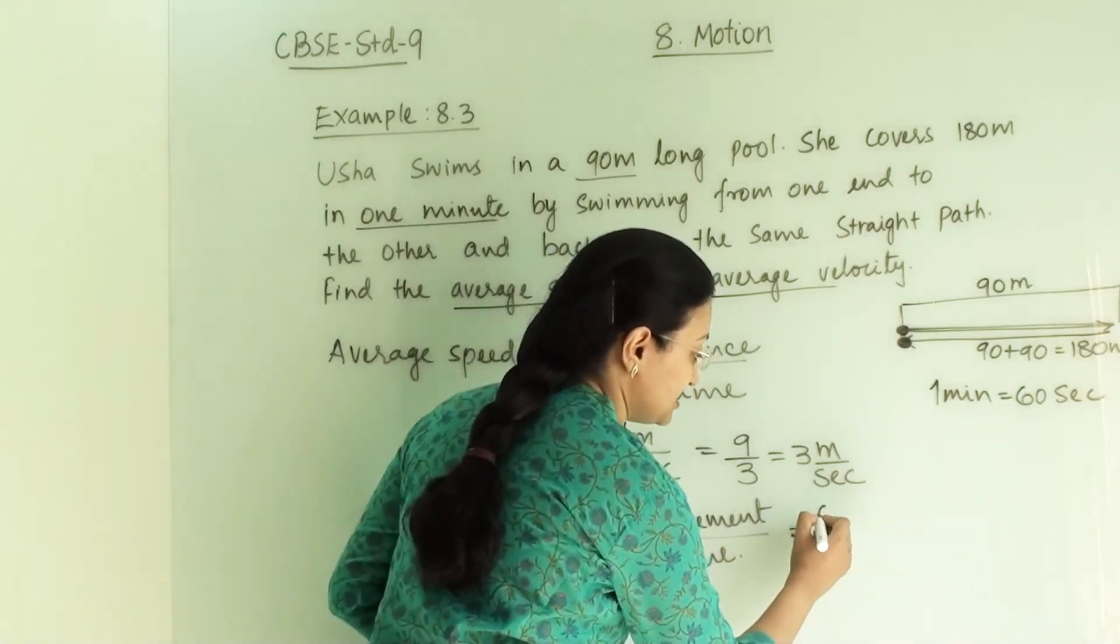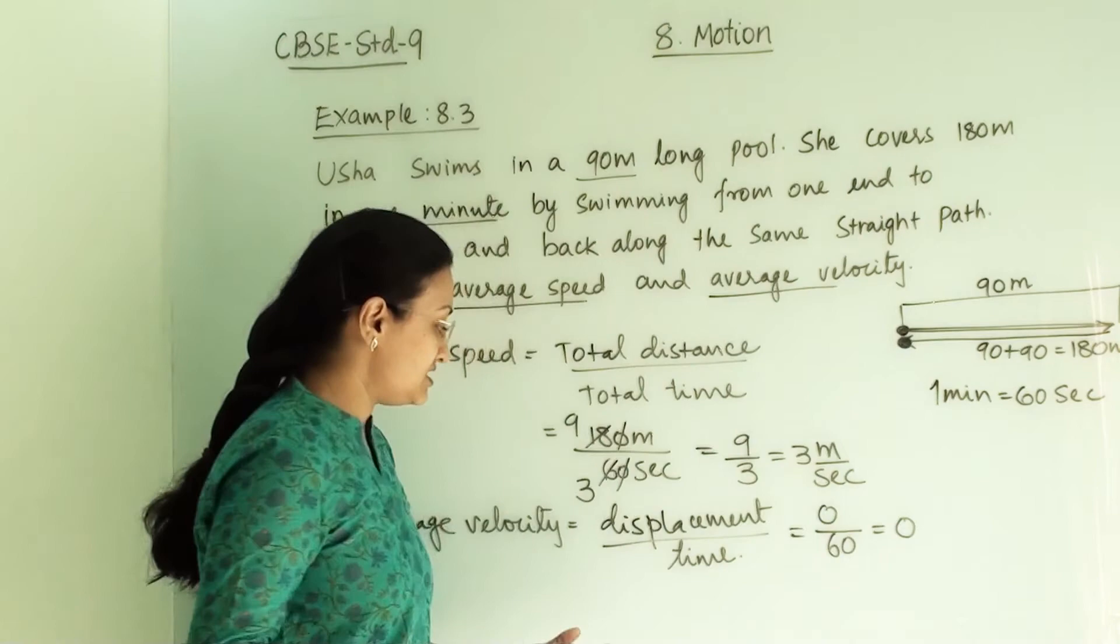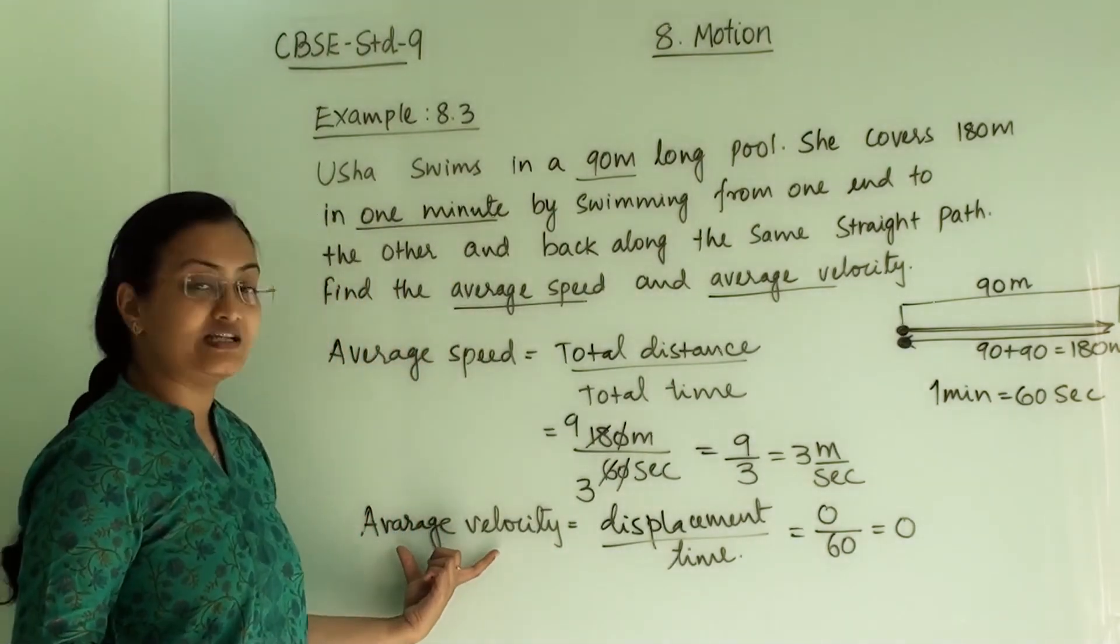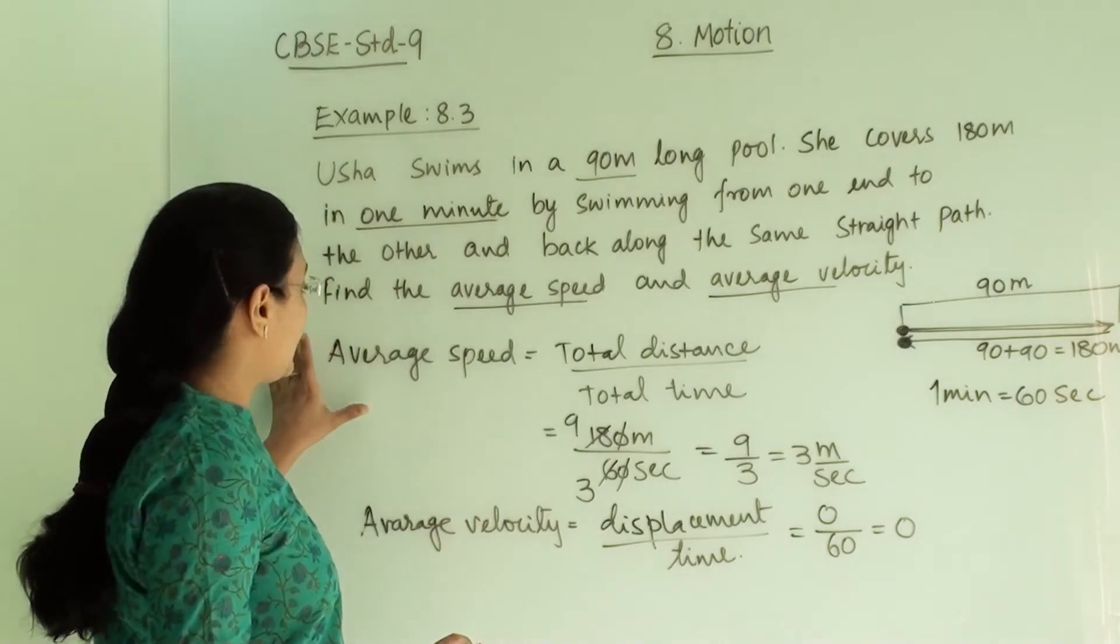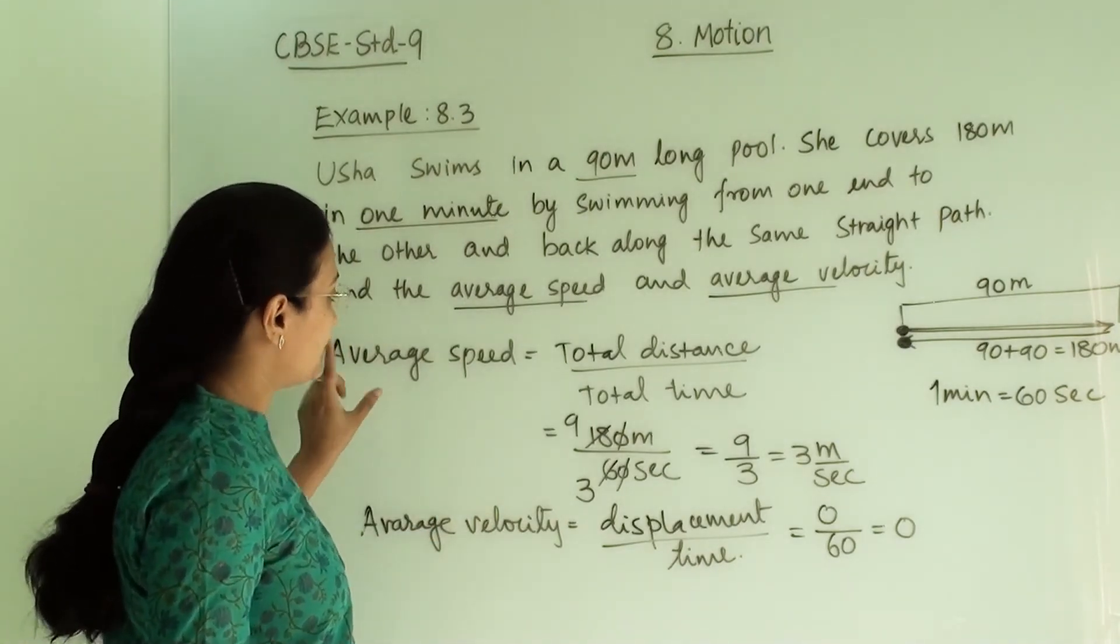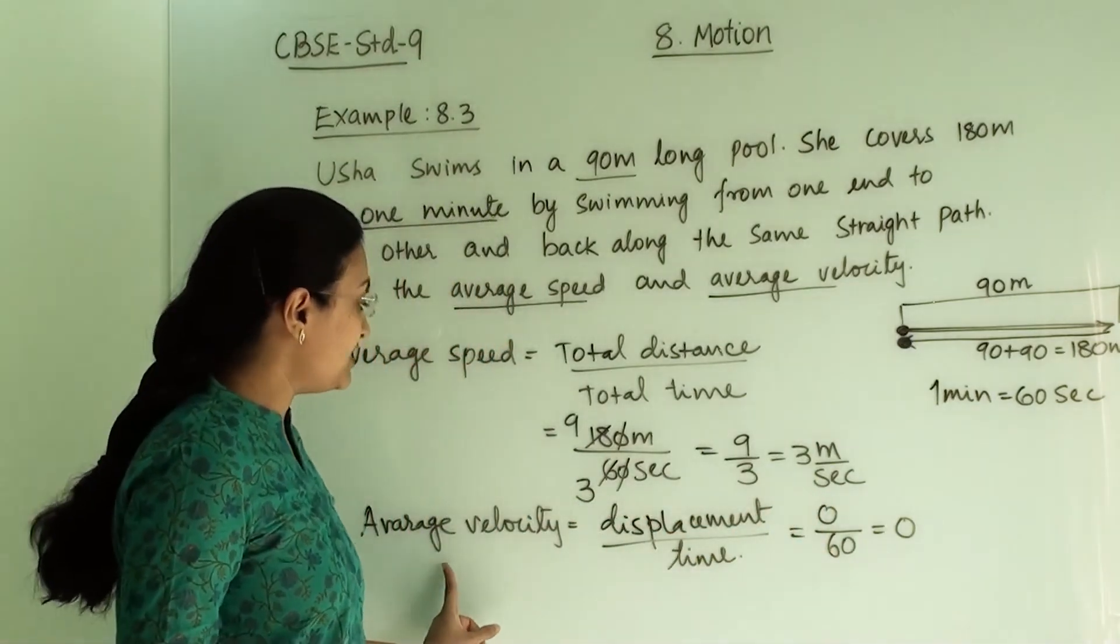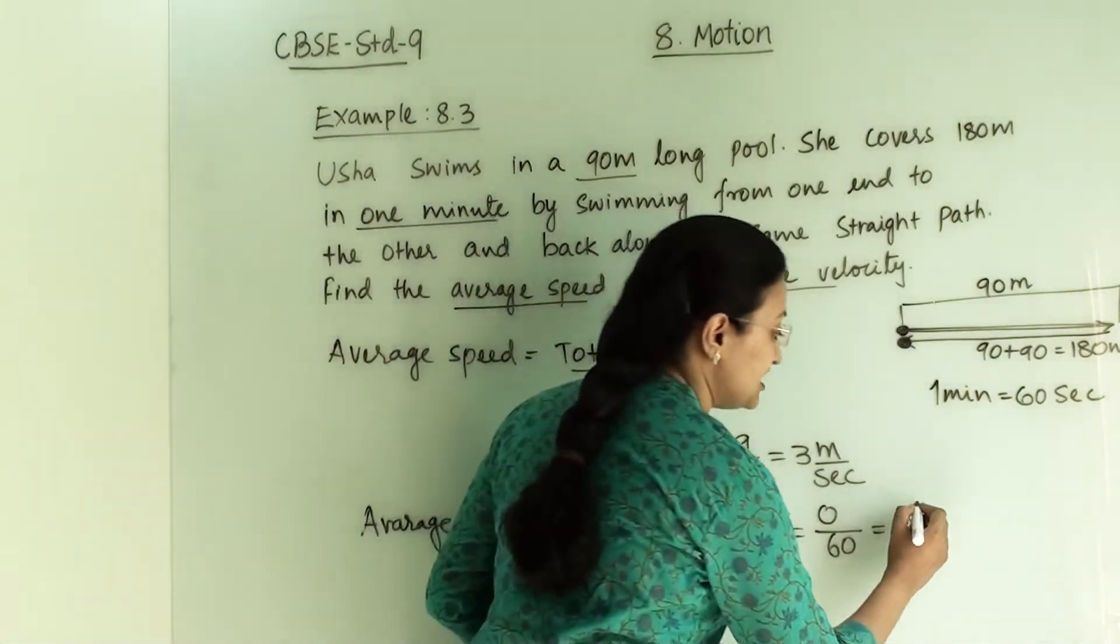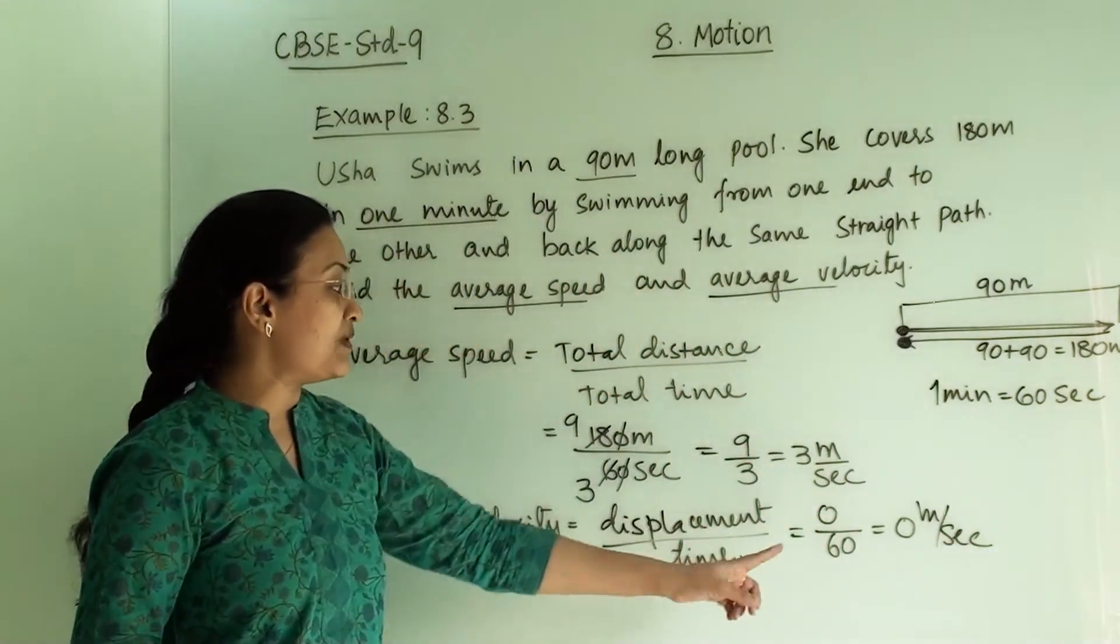So here we are writing 0 divided by 60, so this quantity will be 0. That is average velocity. When we write the final answer: average speed is 3 meters per second and average velocity is 0 meters per second, because her displacement is 0.